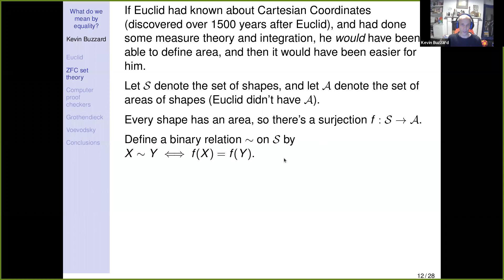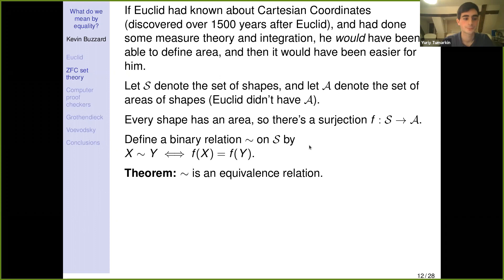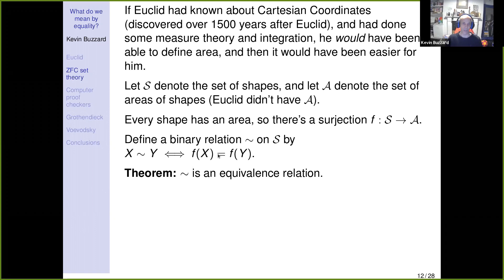Two shapes are related — as Euclid called it, 'equal' — if they have the same area. Forgetting shapes and areas, just imagine you've got two sets S and A and a function f from S to A. We can define a binary relation on S by: x is related to y if and only if f(x) equals f(y). That binary relation is an equivalence relation — it follows immediately from the fact that equality is an equivalence relation. Equivalence relations pull back along maps.